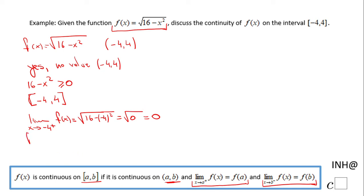So this limit exists and equals 0. Now f(-4) is the same expression: √(16 - (-4)²) = √0 = 0. So these two are the same.